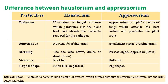Haustoria is the nutrient-absorbing organ and appressorium is the attachment organ. Now we will see the differences between haustoria and appressorium. Haustoria is a fungal structure whose only function is to penetrate inside and absorb the nutrients or energy requirements for the pathogen. If the pathogen wants to multiply or reproduce, it requires a continuous supply of nutrients — that continuous supply of energy and nutrient absorption is met by haustoria.